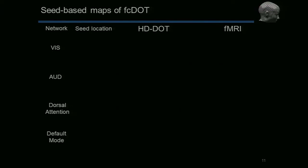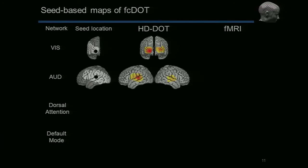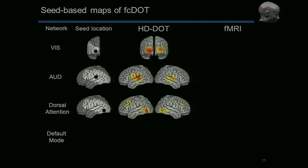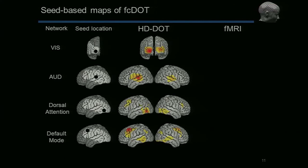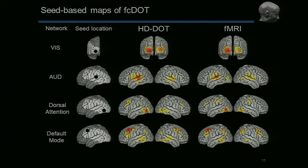What we're really interested in is imaging resting state connectivity patterns. We started by imaging the visual network and auditory network, and then put seeds to pick out some higher-level networks, including the dorsal attention network and the default mode network — which you can think of as the daydreaming network. Importantly, these last two are higher-level networks with not just bilateral connectivity patterns but also anterior-posterior connectivity patterns. In these eight subjects, we then imaged them with fCMRI and got remarkably similar patterns between the two imaging modalities.